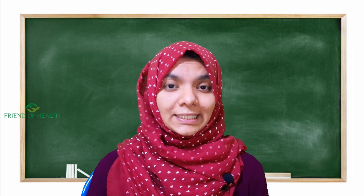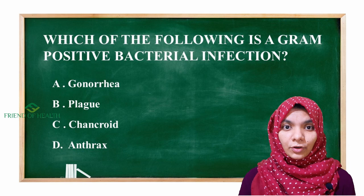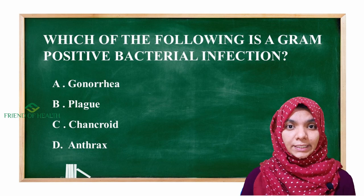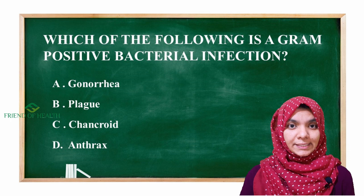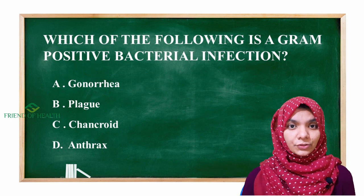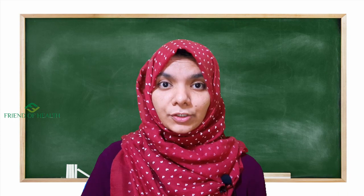Before moving to the mnemonic, let us see one question. This question came for one of the IPGT exams. Which of the following is a gram positive bacterial infection? Option A is gonorrhea, option B is plague, option C is chancroid, and option D is anthrax. Now let us see what is the mnemonic for gram positive and gram negative bacteria.